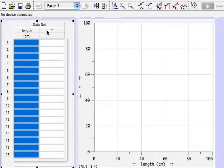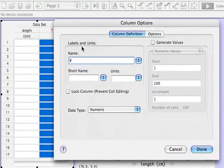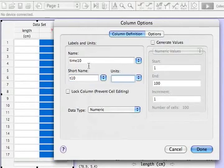We double-click Y to change the next column. We'll call this one Time 10 because it was the time for ten periods. And we'll give it a short name T10 and seconds is its units.